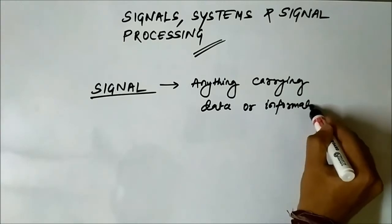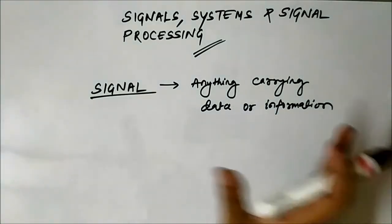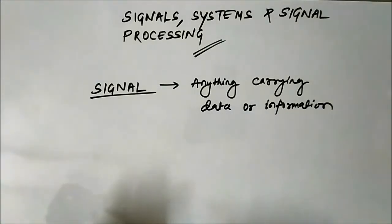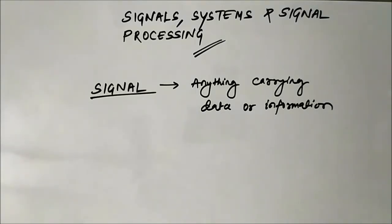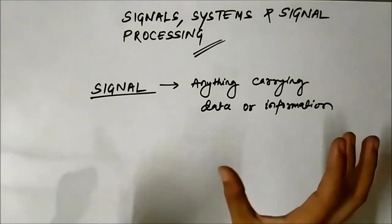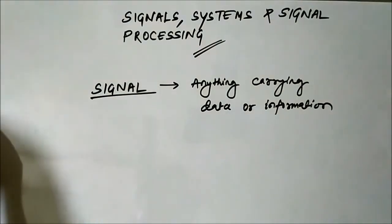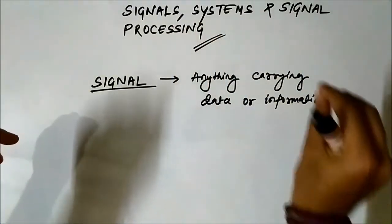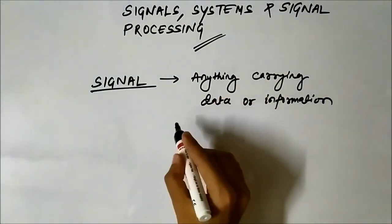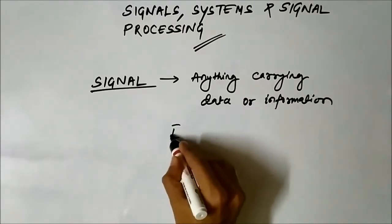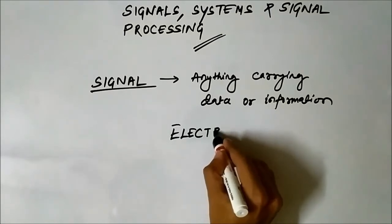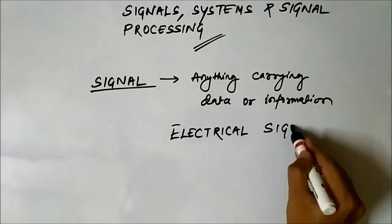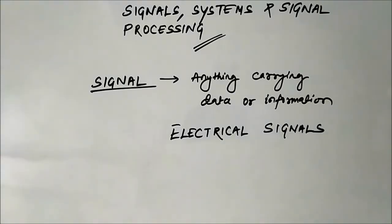...data or information. Anything carrying data or information is a signal. Signals are of various types. In the subject of signal systems and signal processing, we are going to confine our discussion only to electrical signals, because only electrical signals can be interpreted by the various instruments and machines that we use — they can only deal with electrical signals.